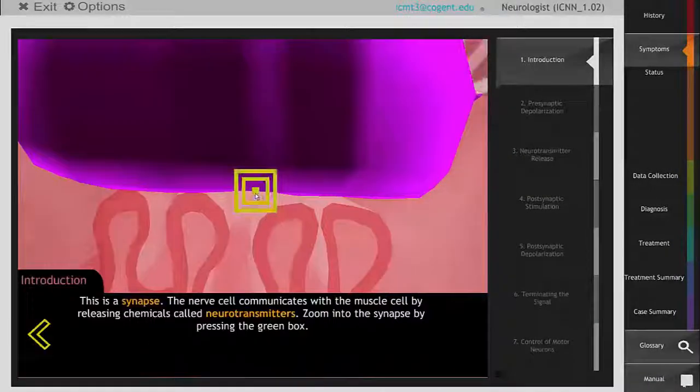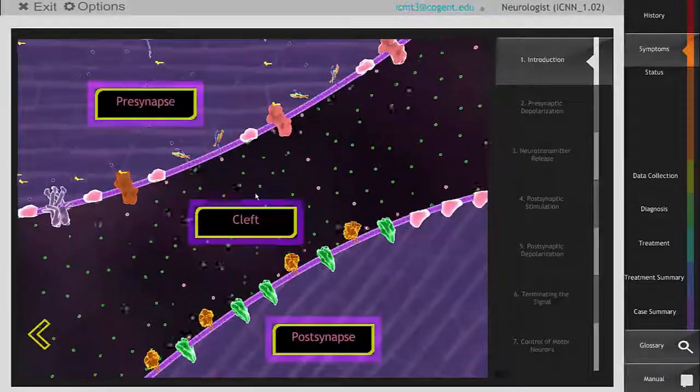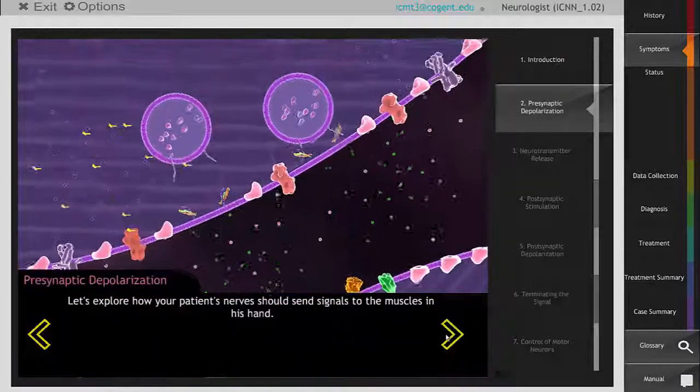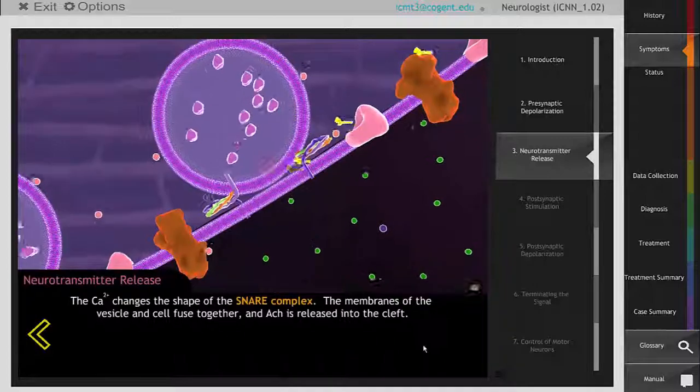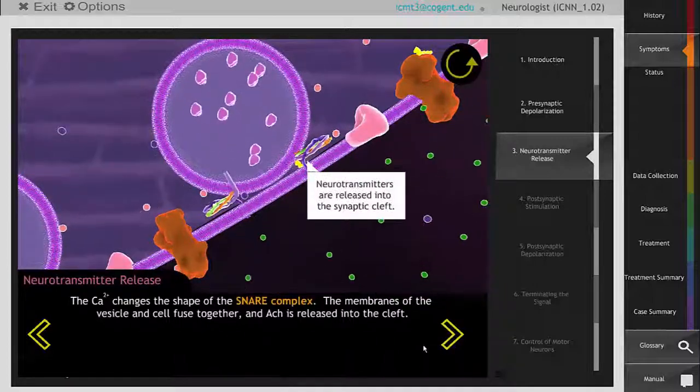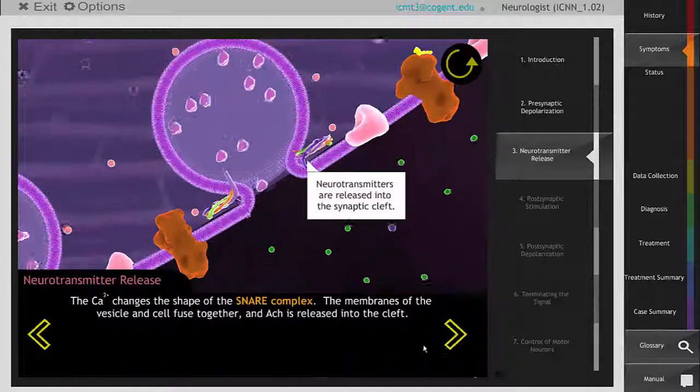First, students go to the cellular level to learn how neurons trigger a muscle cell to contract. They review the anatomy of a synapse and how vesicles release neurotransmitters into the synaptic cleft. This is the action responsible for signaling between neurons.